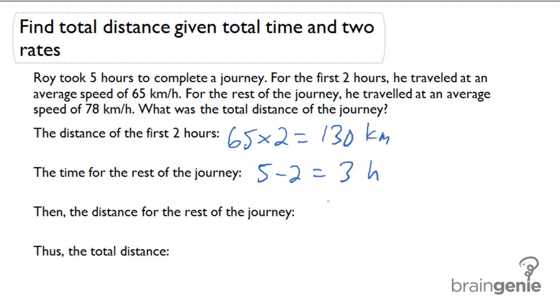Finally, I can calculate the distance for the rest of the journey. 78 times three equals 234 kilometers.